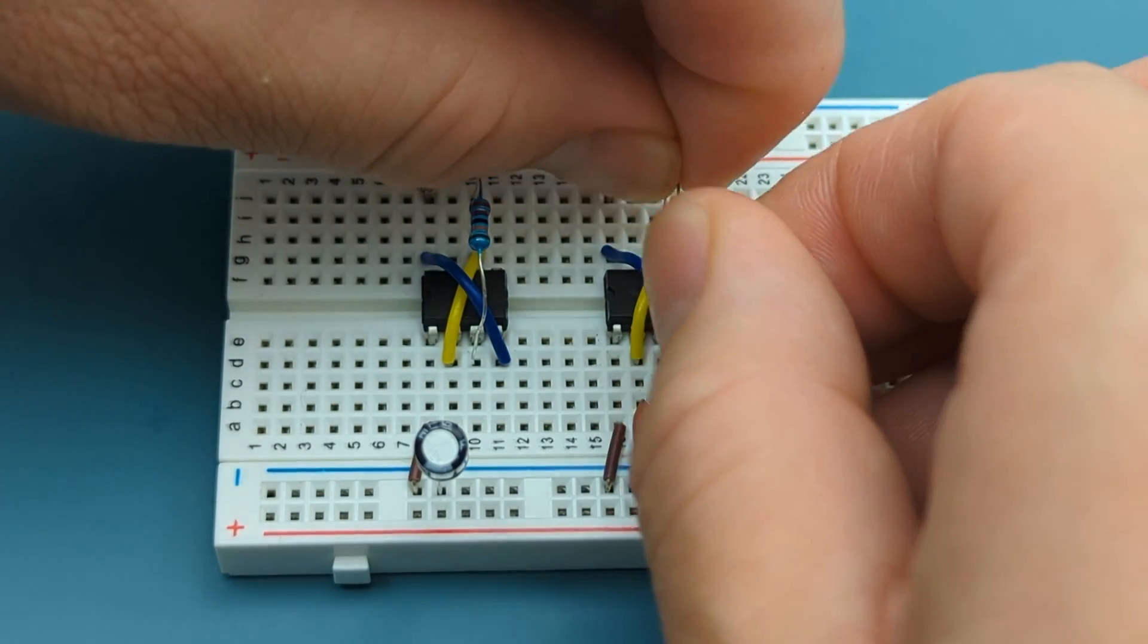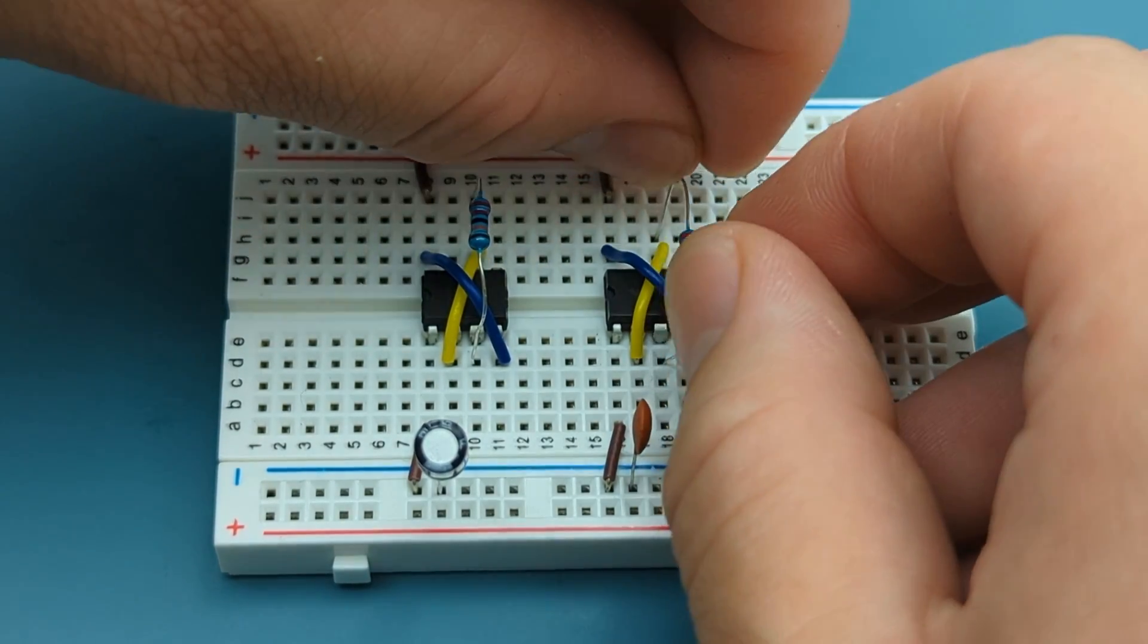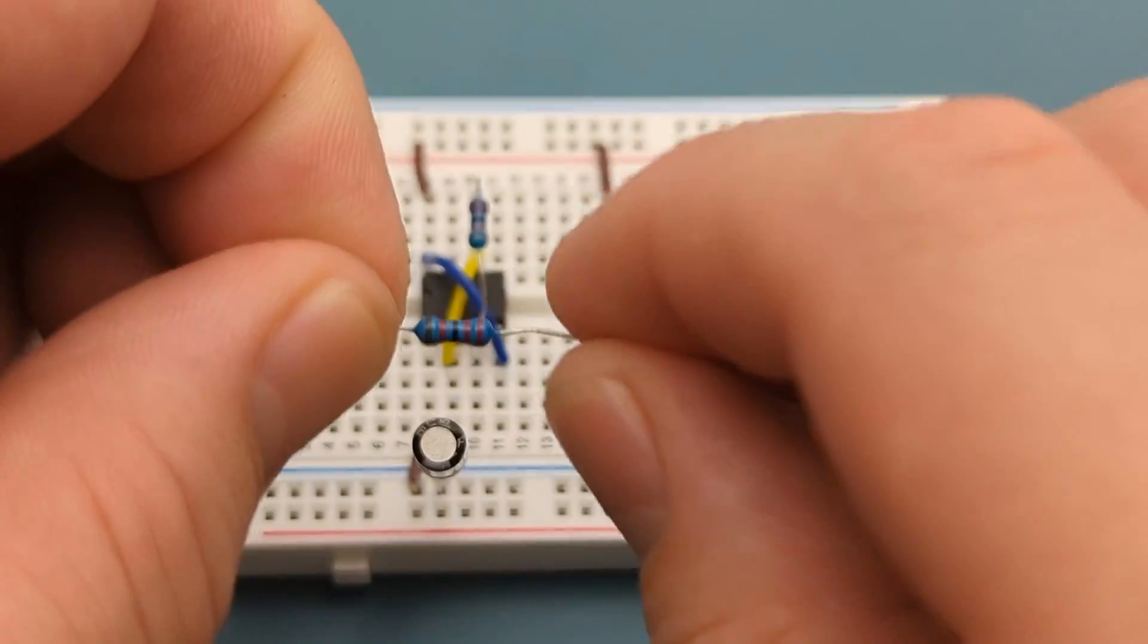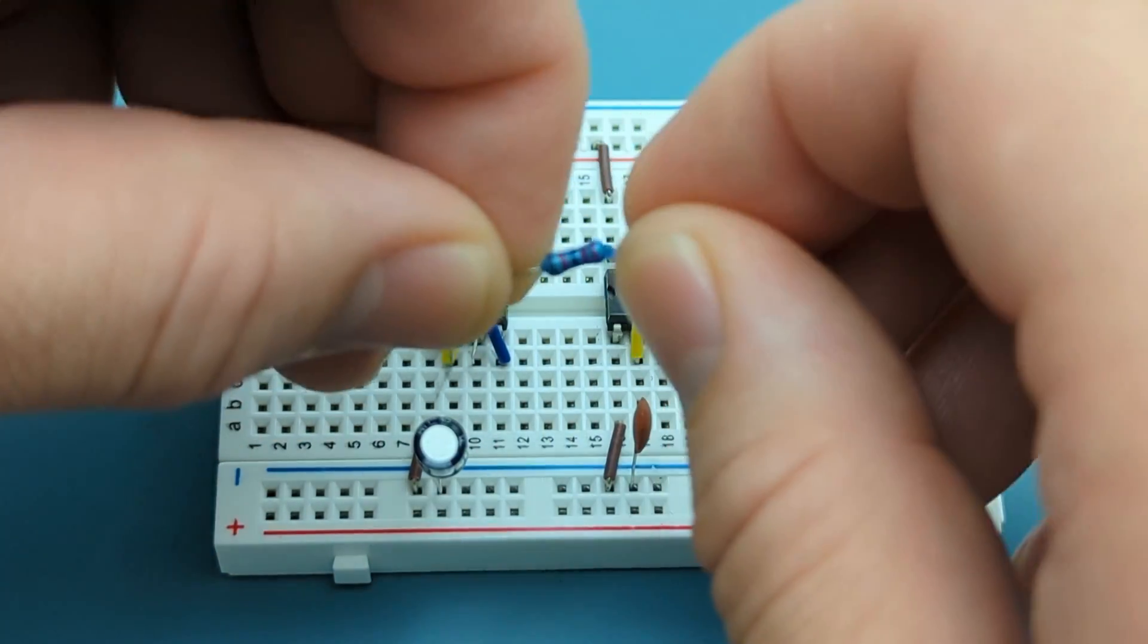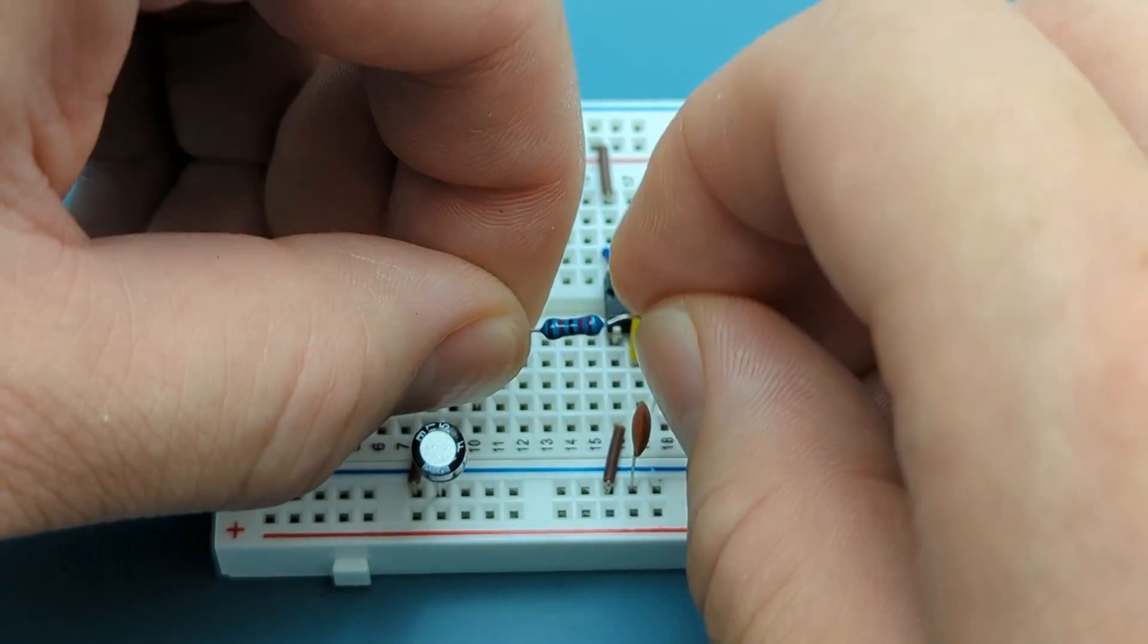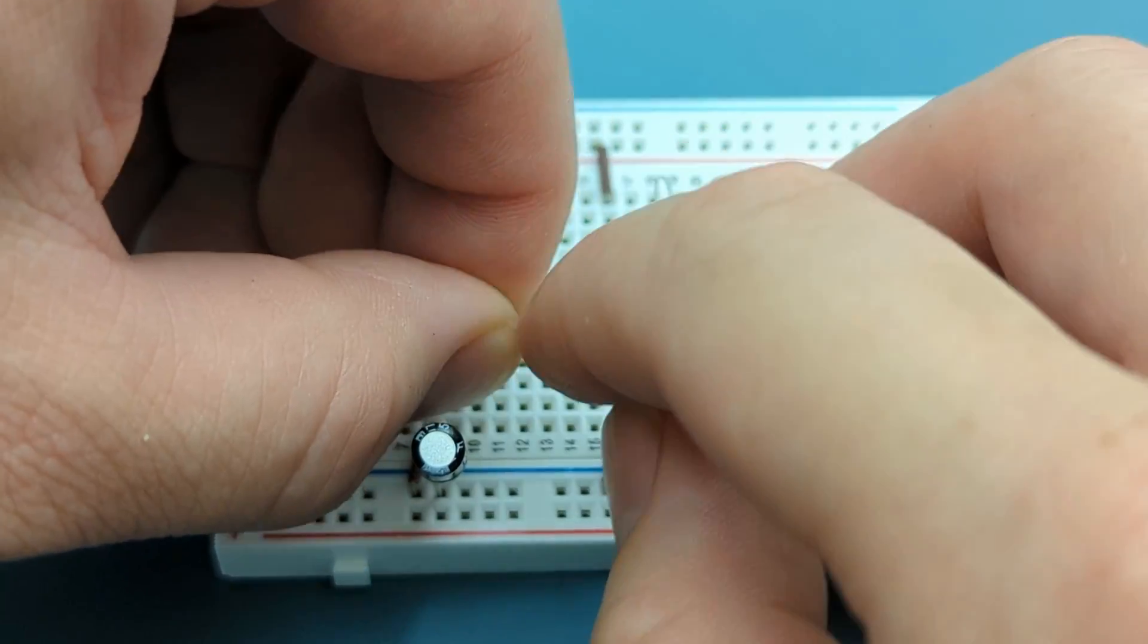Bend the ends of a 22 kilo ohm resistor. Insert the 22 kilo ohm resistor into pin 3 of the first 555 timer and pin 2 of the second one.